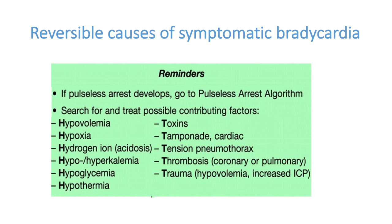The 5 H's are: hypovolemia, hypoxemia, acidosis (hydrogen ion increase), hyperkalemia (most important), and hypothermia (most important). The 5 T's are: toxins, cardiac tamponade, tension pneumothorax, thrombosis (coronary or pulmonary), and trauma (due to hypovolemia or increased ICP). These are the 5 H's and 5 T's to look for in a case of severe significant bradycardia.